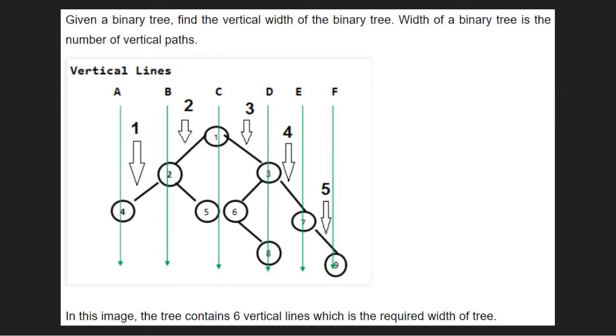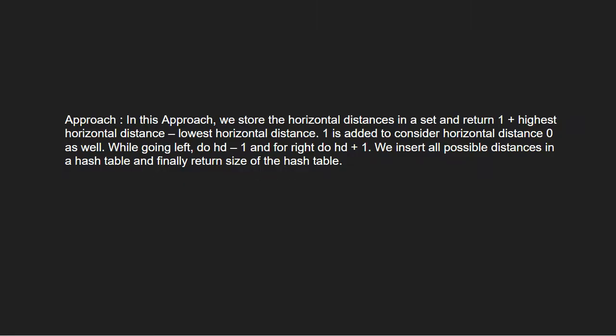Now let us see the approach. In this approach, we store the horizontal distances in a set and return 1 plus the highest horizontal distance minus the lowest horizontal distance. 1 is added to consider horizontal distance 0 as well. While going left, we do hd minus 1, and for right, we do hd plus 1. We insert all possible distances in a hash table and finally return the size of the hash table.